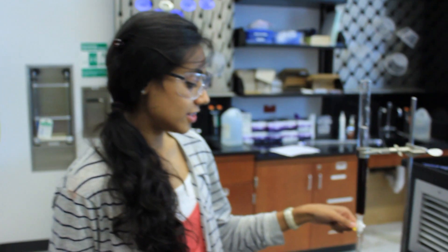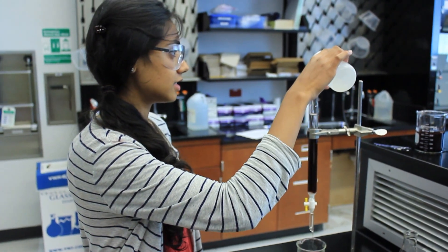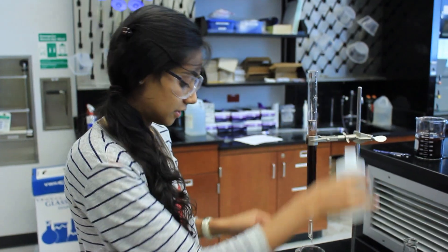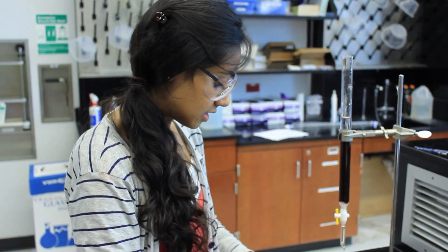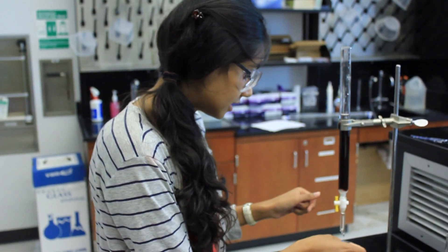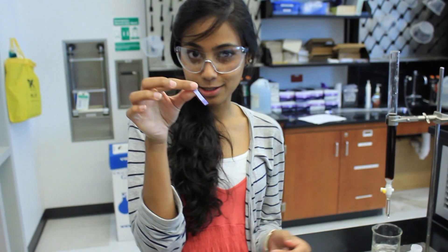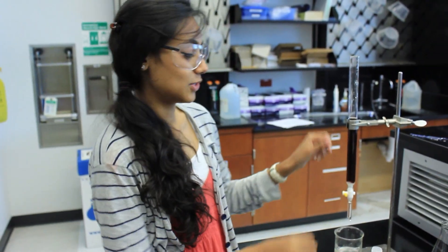Now you have to make your resin slurry basic. You do this by just keeping on pouring DI water through. To test if it's basic or not, just take your litmus paper and let it touch the tip. As you can see, the tip of the litmus paper stays blue. That means your resin slurry is neutral.